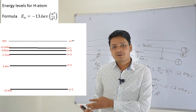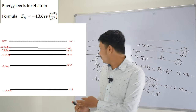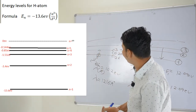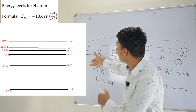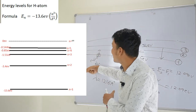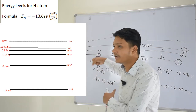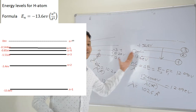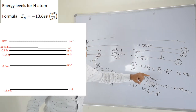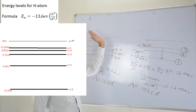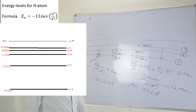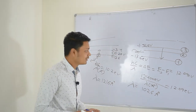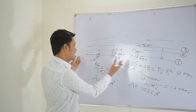This is called the absorption spectrum because it is absorbing energy, and this is the emission spectrum because it is emitting when it is going to a lower state. Here the electron is going to a higher state. So we can derive a formula for any spectrum.